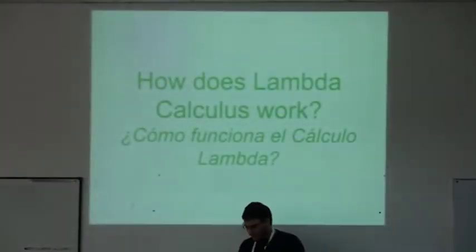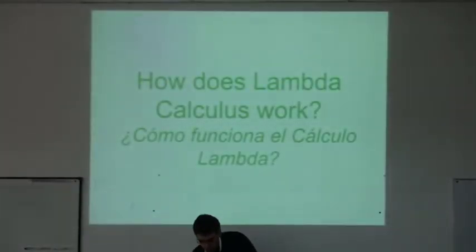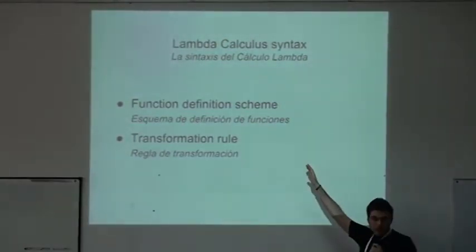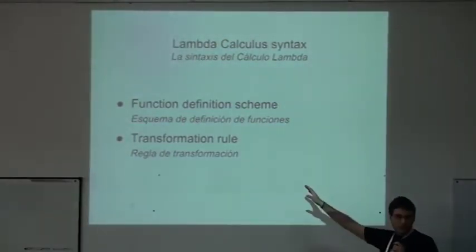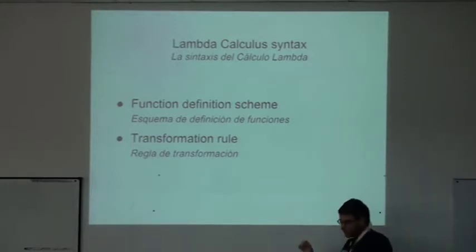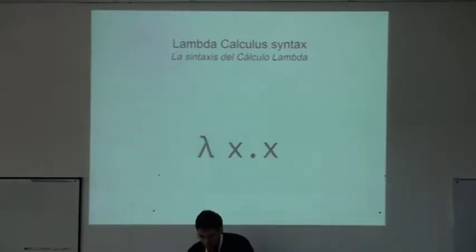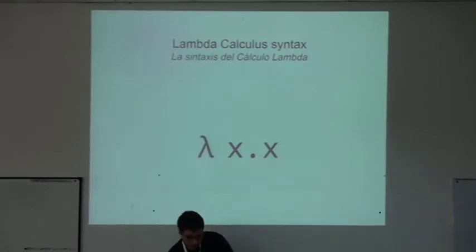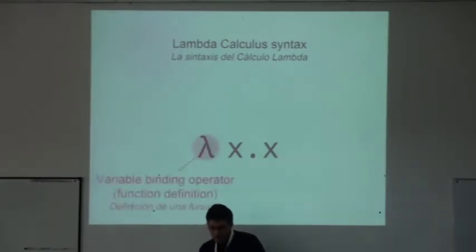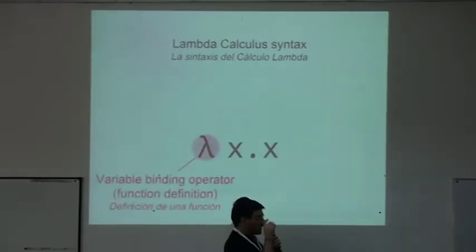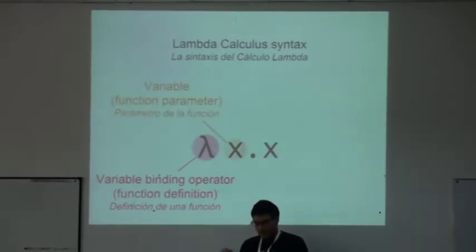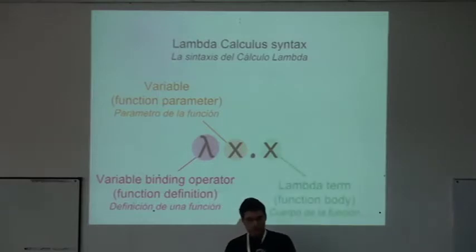How does it work? Well, Lambda Calculus consists of two things: a function definition scheme and a transformation rule. Here is the syntax for defining a function. First, you have the lambda operator that introduces a function, then the function parameter, then a dot, and the body of the function.